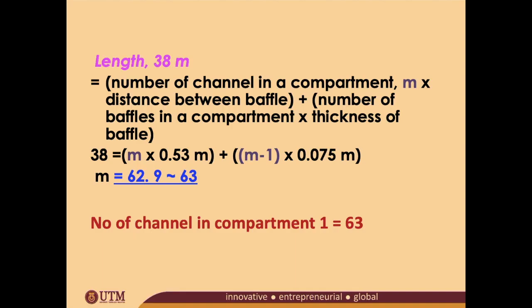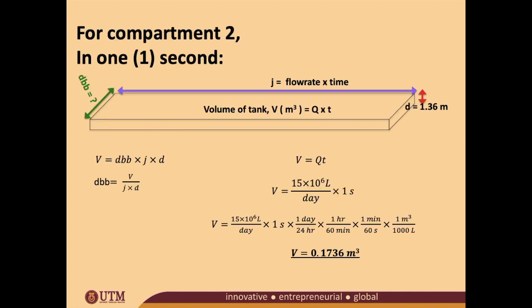Okay, so we are focusing on compartment 2. The same diagram, the depth is not changing. Volume we have already calculated - the same volume because we are assuming still the one second. The DBB is something that we have to find out. So the only thing that will be changing is the flow rate or the J.